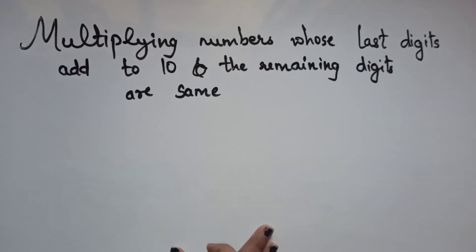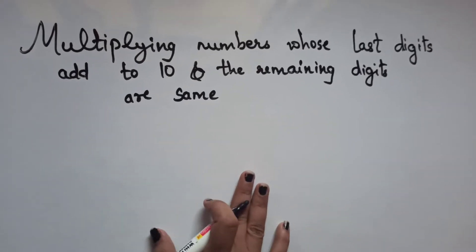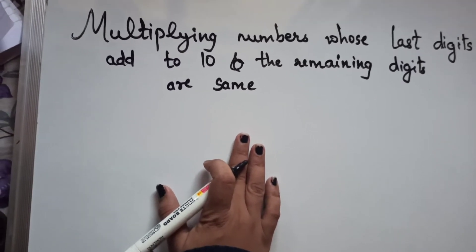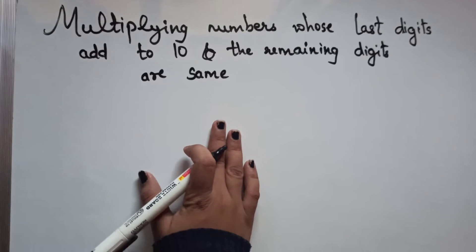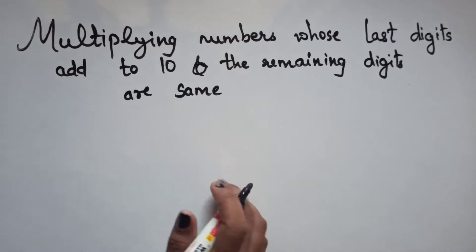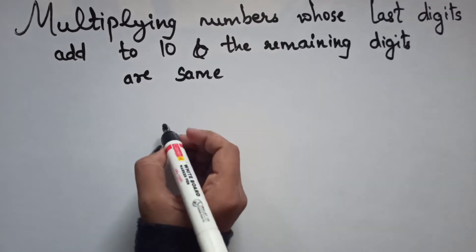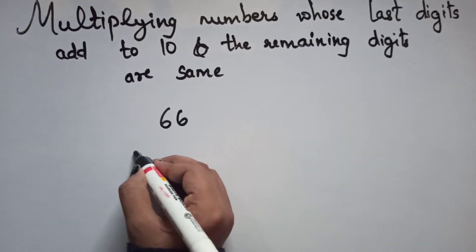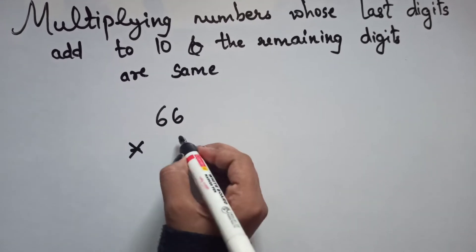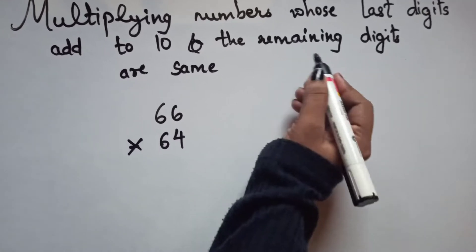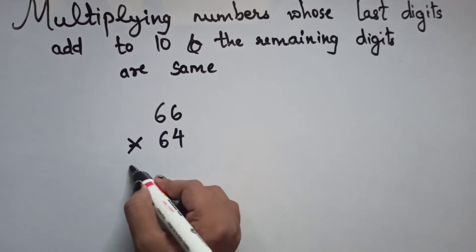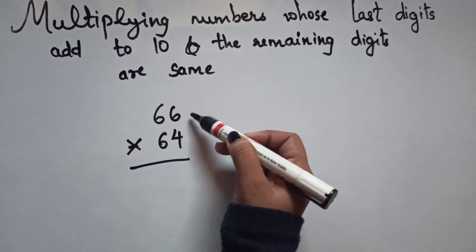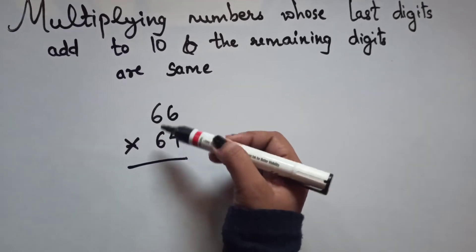The next trick is multiplying numbers whose unit digits add to 10 and whose remaining digits are the same. For example, take 66 × 64: 6 plus 4 equals 10, and both have the same tens digit of 6.